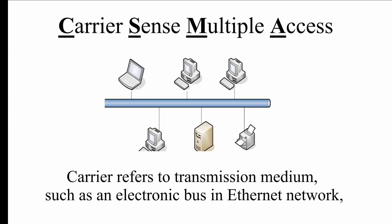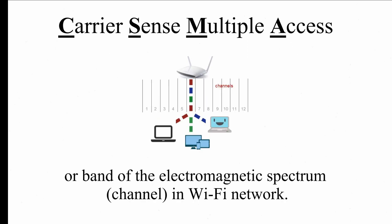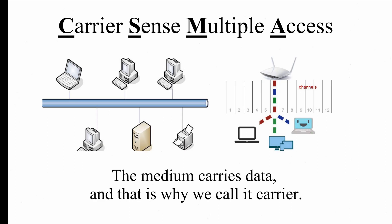Let me explain CSMA first. Carrier refers to transmission media, such as an electronic bus in an Ethernet network or a band of electromagnetic spectrum or channel in a Wi-Fi network. The media carries data — that's why we call it carrier.